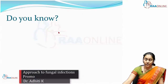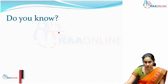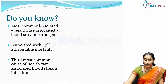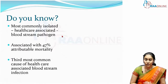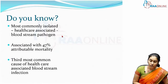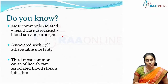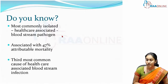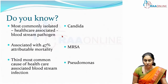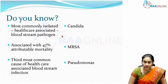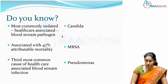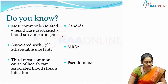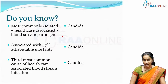I'd like to raise an important question: do you know which is the most common healthcare-associated bloodstream pathogen? Which pathogen is associated with 47% attributable mortality and is also the third most common cause of healthcare-associated bloodstream infection? Is it Candida, MRSA, or Pseudomonas? All three seem to be arguably good choices, but the answer is Candida.